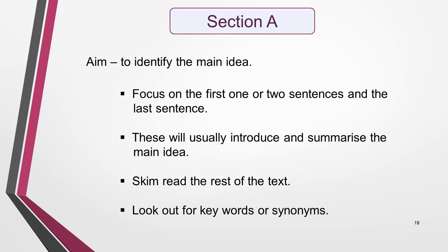Now read the first section of the text. Your aim is to identify the main idea. As in Strategy 1, focus on the first one or two sentences and the last sentence, as these will usually introduce and summarise this idea. Skim read the rest of the text. Look out for any key words you underlined in the headings, but be aware that synonyms could be used instead. If the section contains more than one paragraph, you'll need to find the main idea in each paragraph.